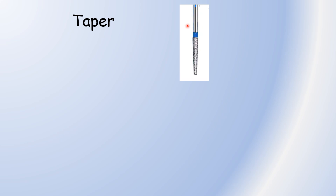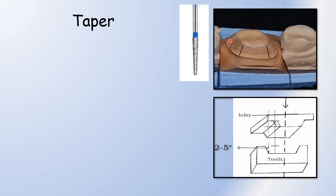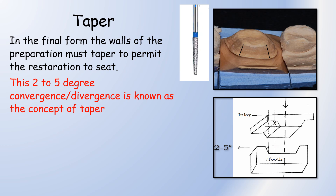Coming first to taper — we use a flat and taper diamond for this purpose. The shape of the burr is such that as it cuts the tooth surface, it imparts a taper of 2 to 5 degrees. In the first picture, the crown walls show occlusal convergence of 2 to 5 degrees. In the second picture, the walls are diverging occlusally 2 to 5 degrees — this is inlay preparation. In the final form, the walls of the preparation must taper to permit the restoration to seat. This 2 to 5 degree convergence or divergence is known as the concept of taper.